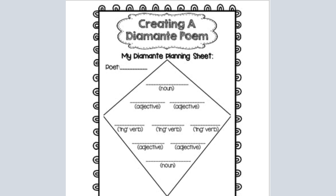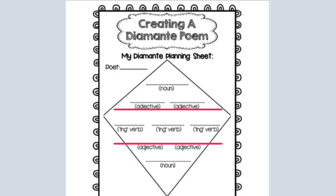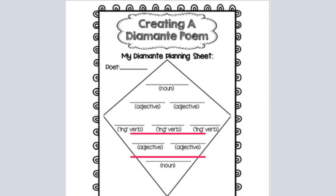So let's look at this one as an example. On your first line you have a noun — remember, nouns are people, places, or things — so you're going to fill that out with whatever noun you want. Below it you have two adjectives; remember, adjectives are describing words. Then on the middle row you have three -ing verbs, like hiking or hitting. Then we have more adjectives which are descriptive words, followed by a noun.